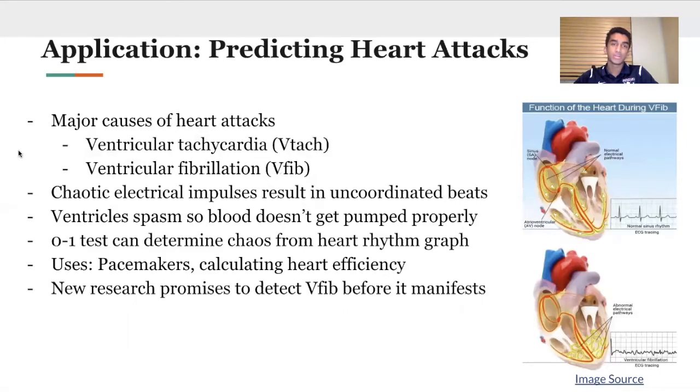A very good application of the 0-1 test for chaos has been predicting heart attacks. The major causes of heart attacks, ventricular tachycardia and ventricular fibrillation, are caused when the electrical impulses that tell the heart when to beat in the ventricles become chaotic. Instead of synchronized pumping between the ventricles, you get spasms, so blood doesn't get pumped properly. An AED shocks the heart back into proper sinus rhythm. You could get a test of someone's heartbeat as it varies over time, which would be a dynamical system, and run the 0-1 test on it. It can tell you whether or not your heartbeat is chaotic. Maybe it appears normal and regular, but it's actually chaos, and you could predict whether or not this person may have a heart attack in the future.